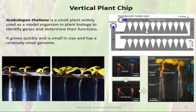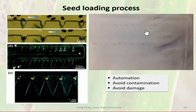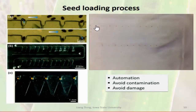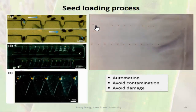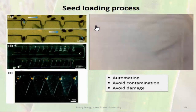Since the device is transparent, you can observe their growth over time. The concept is simple: you put the seed at the inlet and apply negative pressure on the other side so the seed gets loaded into the seeding site. Each seeding site only allows one seed, and the others pass by to the next site—so there's no contamination issue during handling and the seeds won't get damaged.